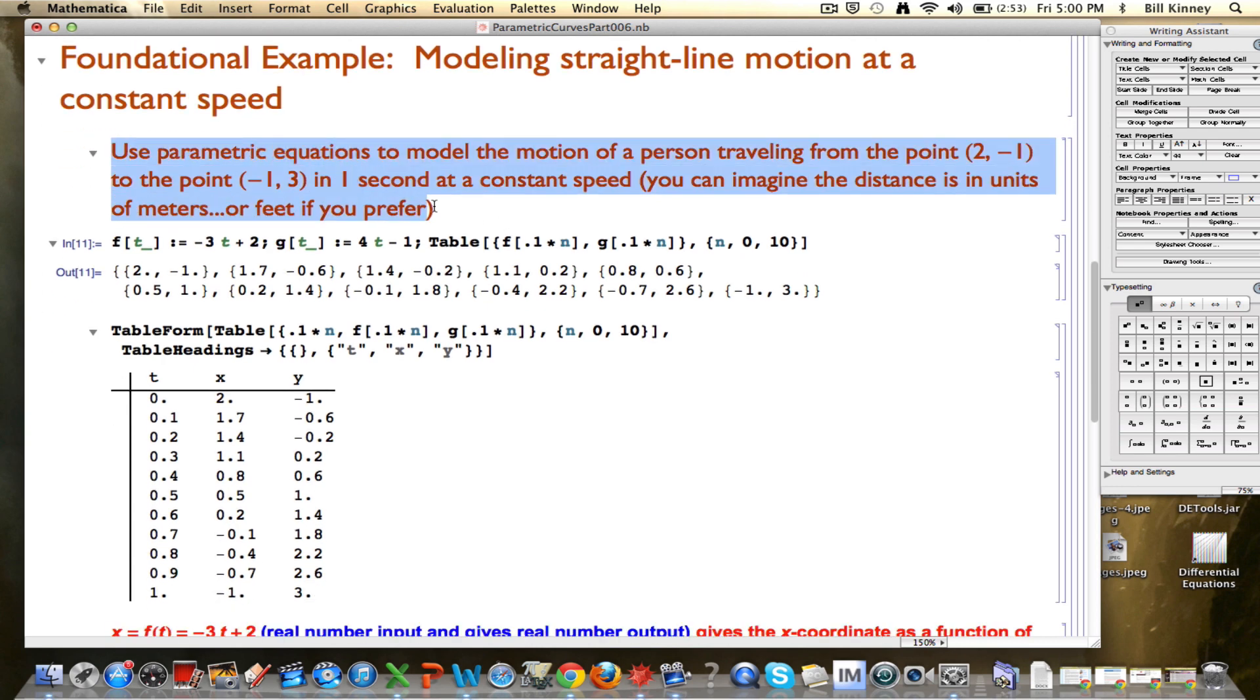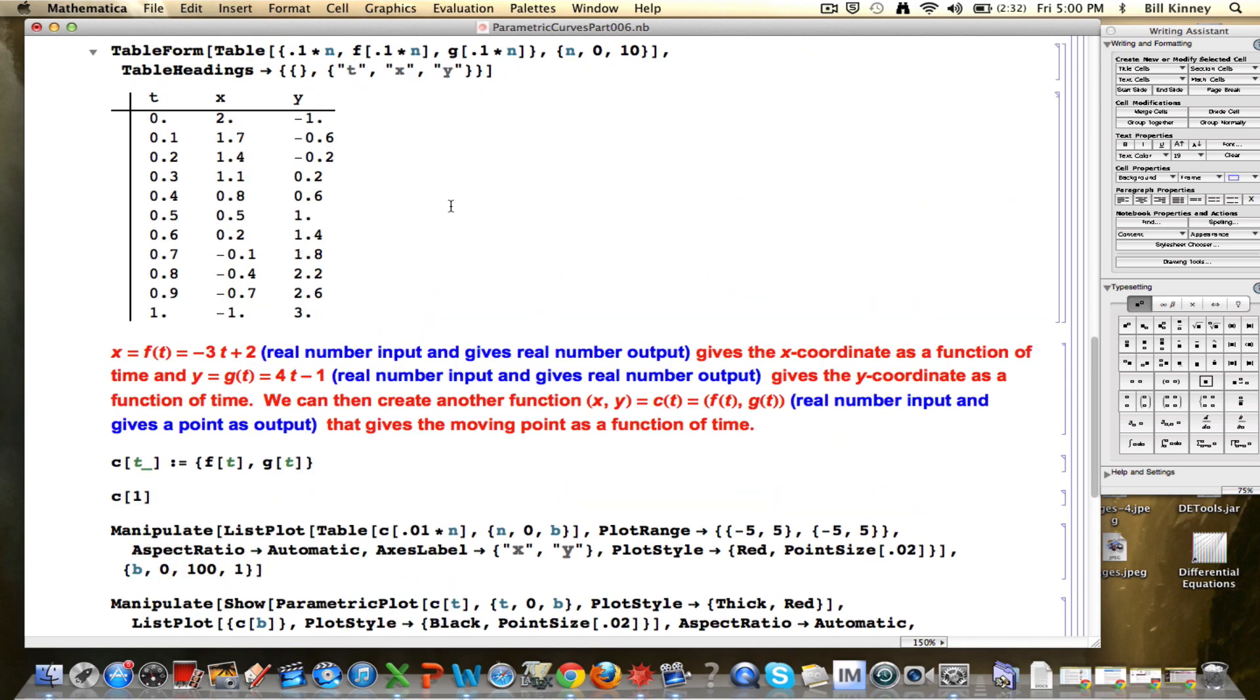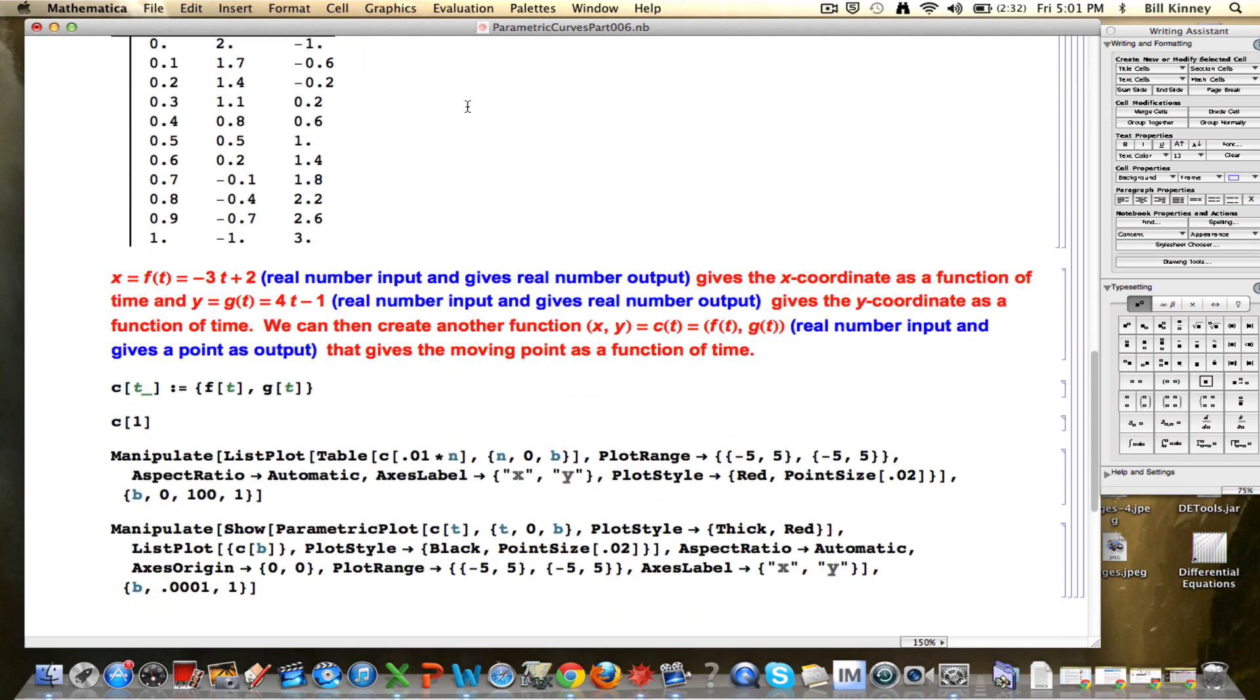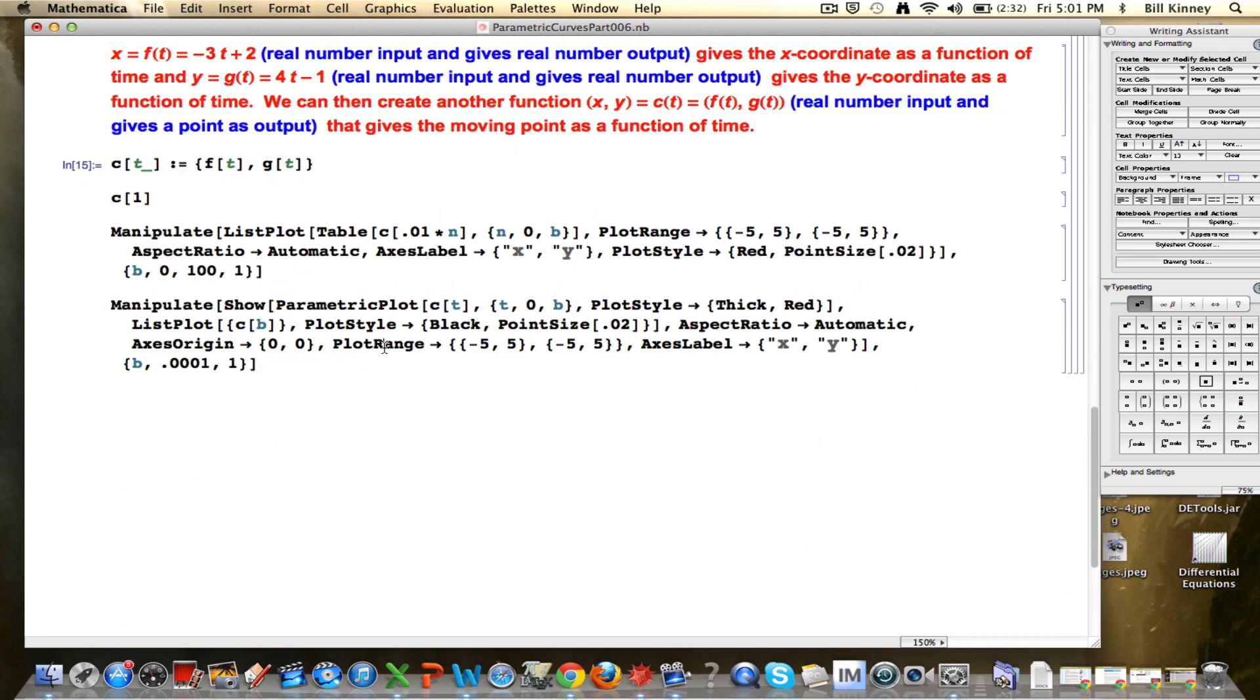We'll think about it in the context of our example here. Our example was to use parametric equations to model the motion of a person starting from the point (2, -1) and going to the point (-1, 3) in one second at a constant speed. In Mathematica, I'll go ahead and run some Mathematica here. We had some linear functions that we used to model this motion. And ultimately, in the last video, I believe, we looked at this particular code right here.